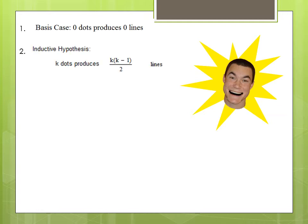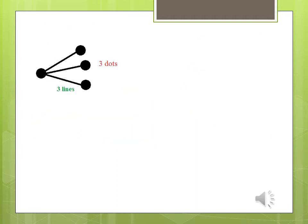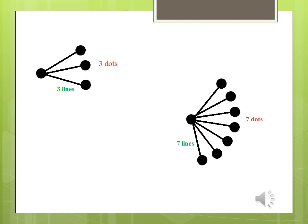Let's state our inductive hypothesis. If we have k dots, we can connect those k dots with k times k minus one over two lines. We need to show that k plus one dots can be connected with k plus one times k over two lines. Well, k plus one dots is actually k dots with one extra dot. If I have three dots and add one, I can connect the new dot to the original three dots using three lines. If I have seven dots and add one, I can connect the new dot to the old seven dots with seven lines.